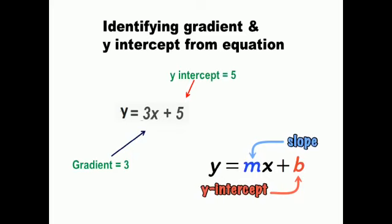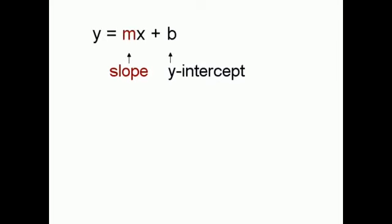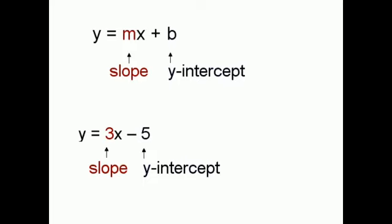y is equal to mx plus c or mx plus b — any letter can be used. Some books write mx plus c and some other places write y equal to mx plus b. Both are the same. The last term is the y-intercept, and the value with x is called slope or gradient. Here, m is the slope and the constant is the intercept. For example, y equal to 3x minus 5: the slope is 3 and the y-intercept is minus 5. So m is equal to 3 and c is equal to minus 5.